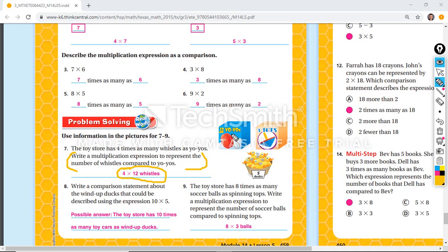Okay, so how many yo-yos do you have? 12. Good. Four times as many whistles as yo-yos.